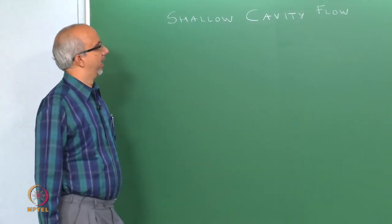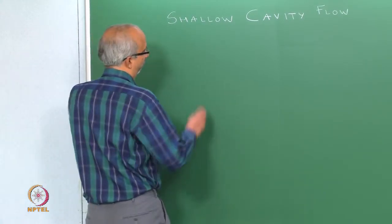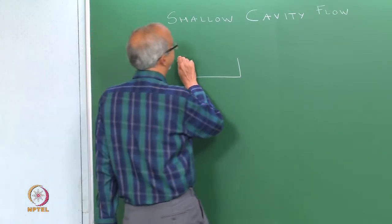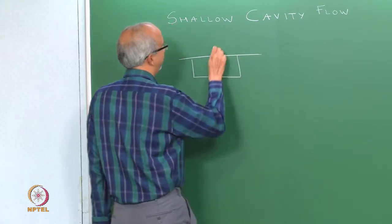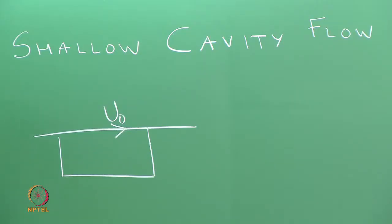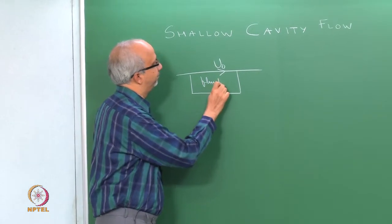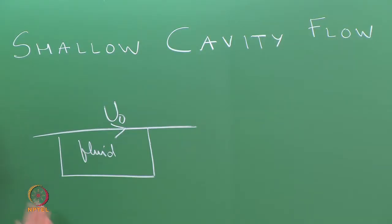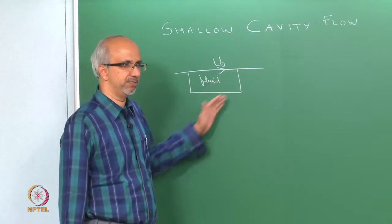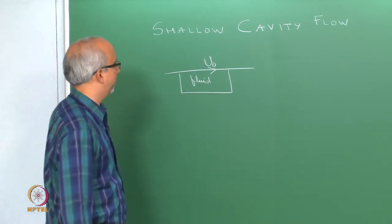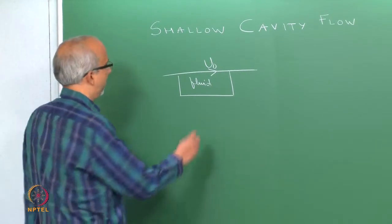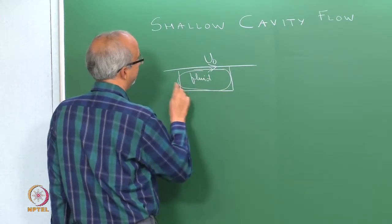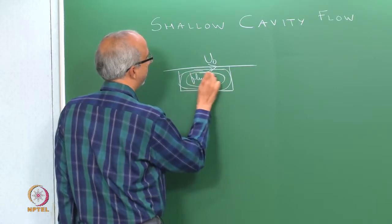As far as shallow cavity flow is concerned, what exactly is a cavity? Think of a rectangular channel, and let's say there is a top plate which is moving with a particular velocity U0. There is a fluid confined here in this rectangular channel, extending to infinity outside the plane of the board. We are looking at the story in this 2-dimensional plane, with no variations in the direction perpendicular to the board. The liquid is going to be dragged by the top wall and is going to circulate — it definitely cannot penetrate the wall.